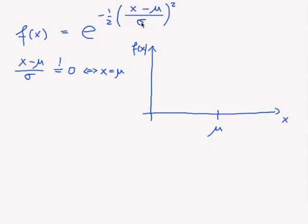And since here's a minus, this is the largest exponent which we can get. So it is e raised to the power of zero, which is one. And so here at mu, we do have the value one.